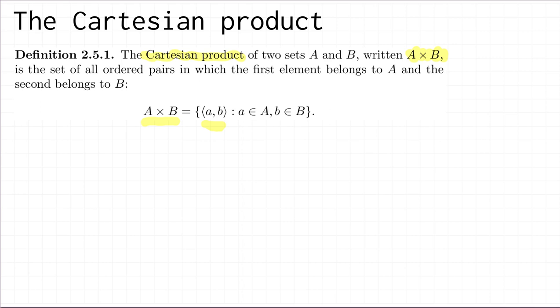So to take an example of this, if we had, let's say, A was equal to the set containing 0 and 1, and B was equal to the set containing 1 and 2, then the Cartesian product A × B would have all the ordered pairs where the first element came from A and the second element came from B. So the first element could be 0, in which case the second element is 1 or the second element is 2.